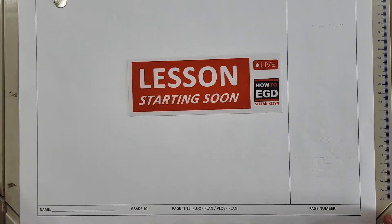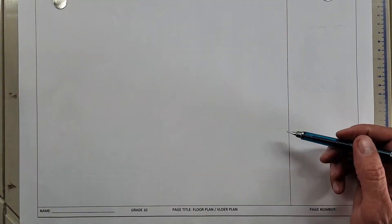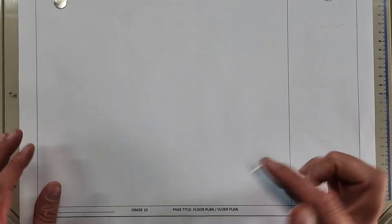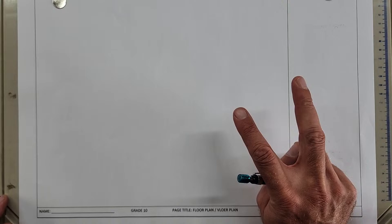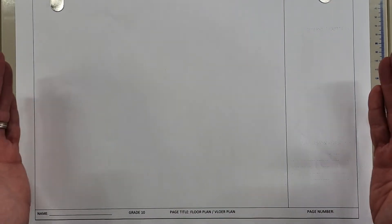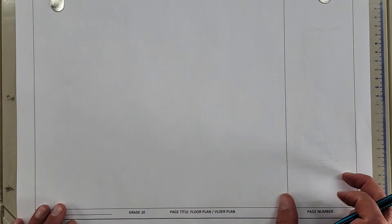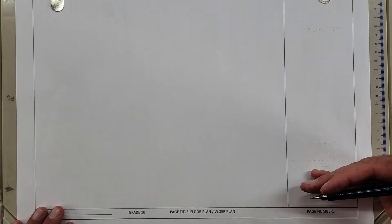Alright, Grade 10s, welcome to this video. We're working on your EGD PAT, the civil pattern. I'm going to do two important parts in this lesson. If you're in my class, you've gotten a page like this where I've already given a space on the right-hand side for the title block, and I'm going to teach you through the requirements of this title block.